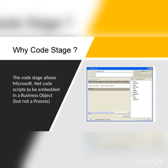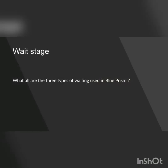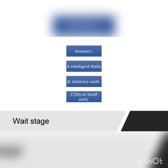When we talk about arbitrary waits, we are not checking any window status. Instead, we are mentioning some fixed delays — for example, if I am spying some element and I never bother whether the element is captured or not, I simply give a wait of 20 seconds or 10 seconds. These types of fixed delays are called arbitrary waits.